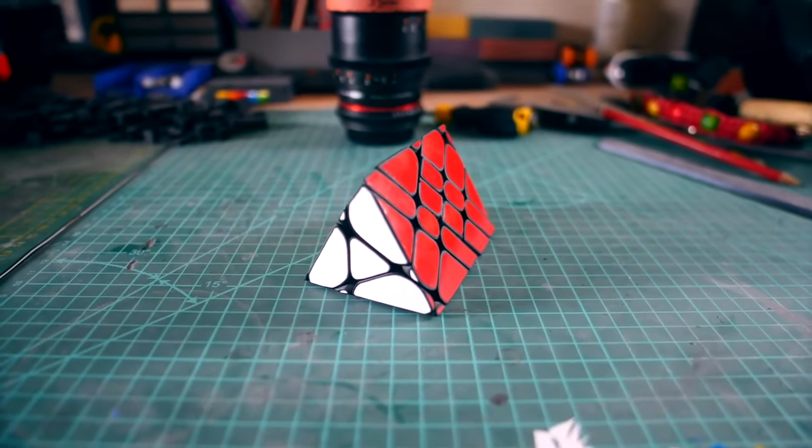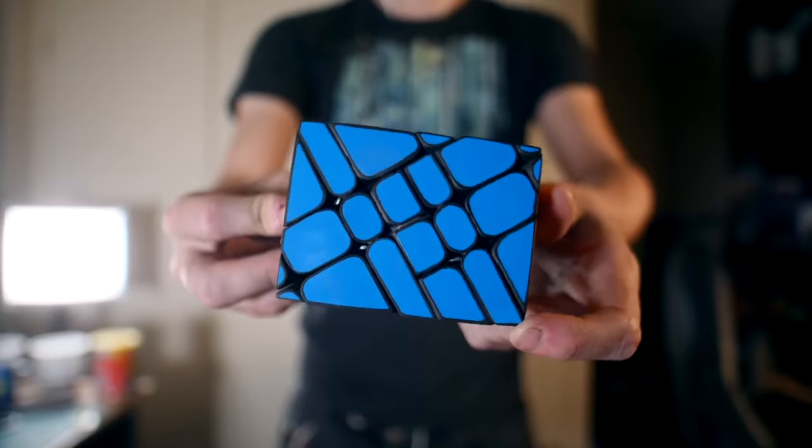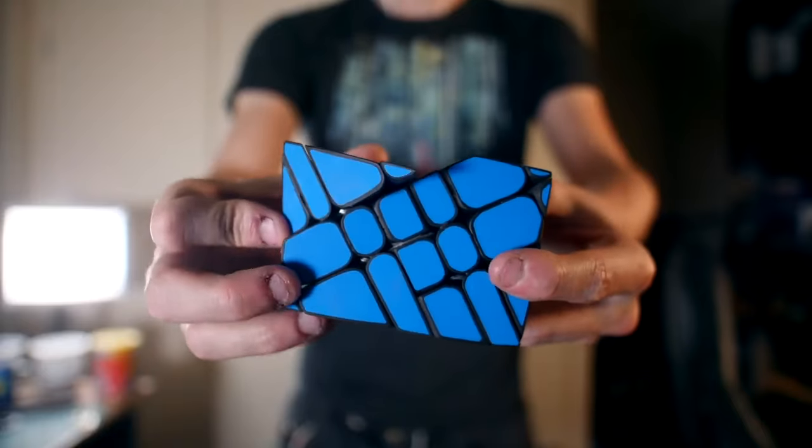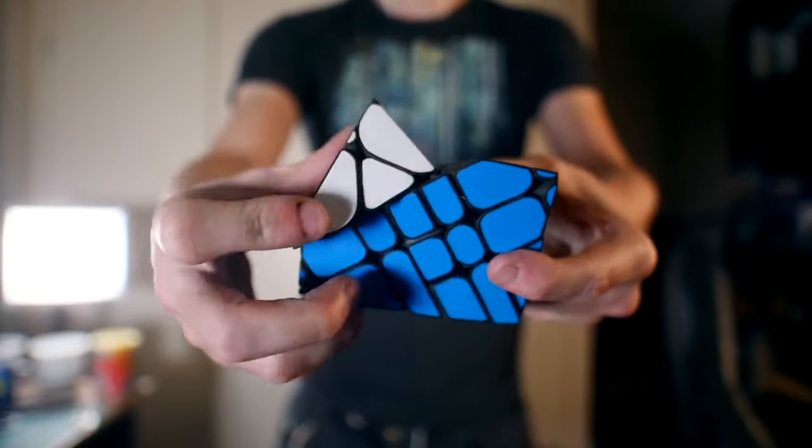So what I've done here is I've pretty much made a bandage modification. In order for both of the puzzles to turn, one of them has to be moved first followed by the other.